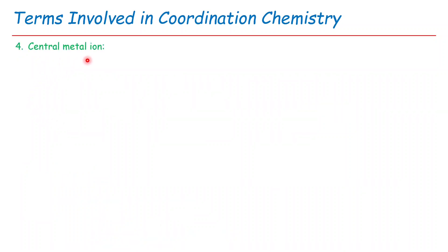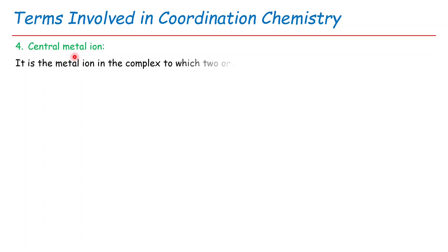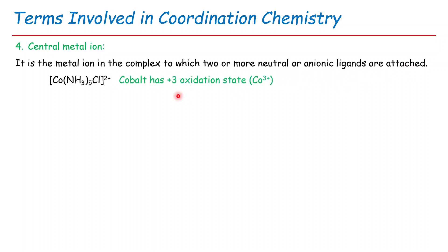The next important term is central metal ion, which should not be confused with central metal atom. The central metal atom has 0 oxidation state, while the central metal ion has a non-zero oxidation state. The central metal ion is the metal ion in the complex to which two or more neutral or anionic ligands are attached. For example, Co³⁺ in a cobalt complex has an oxidation state of +3. Metal ion has an oxidation state greater than 0; metal atom has an oxidation state of 0.